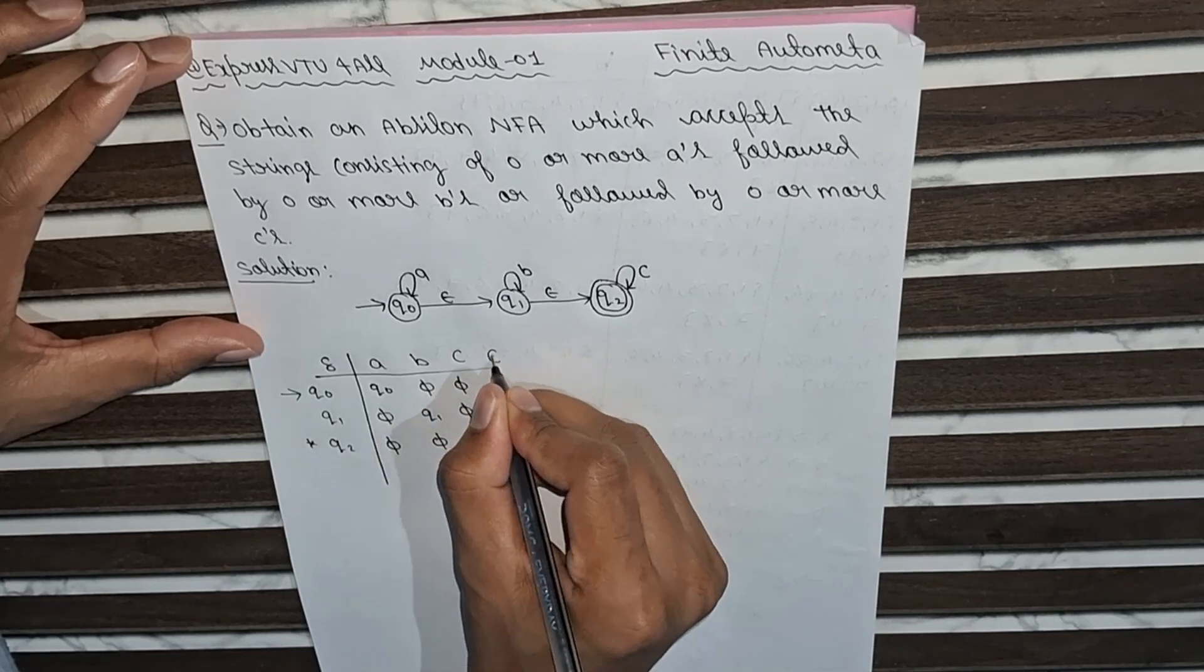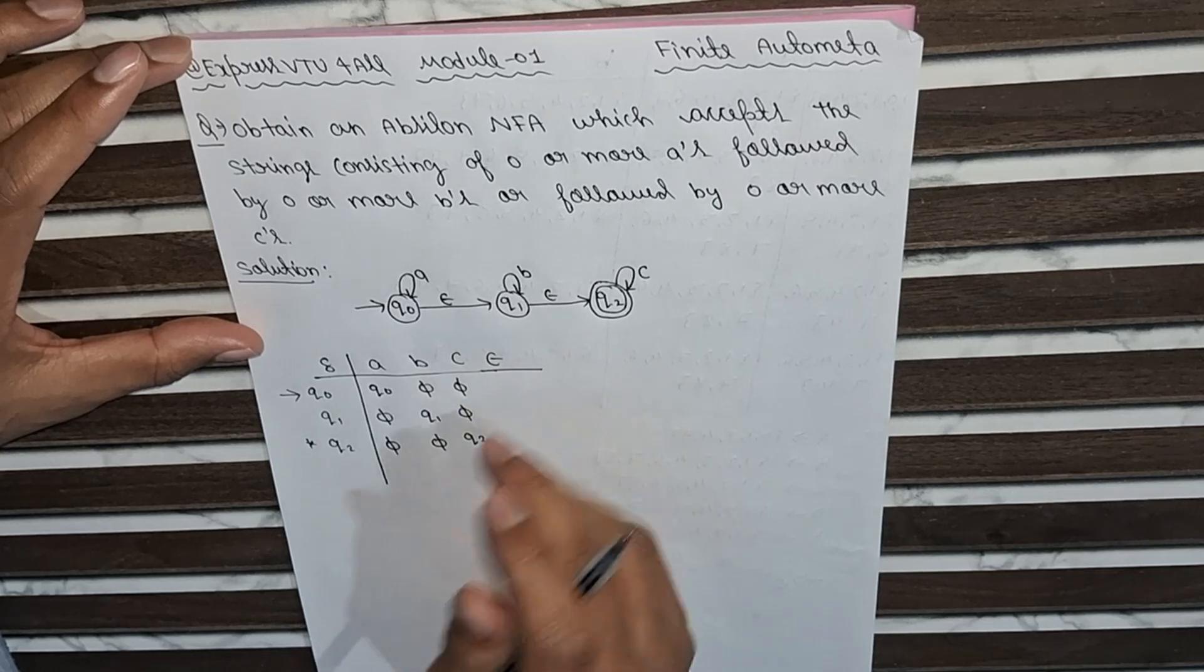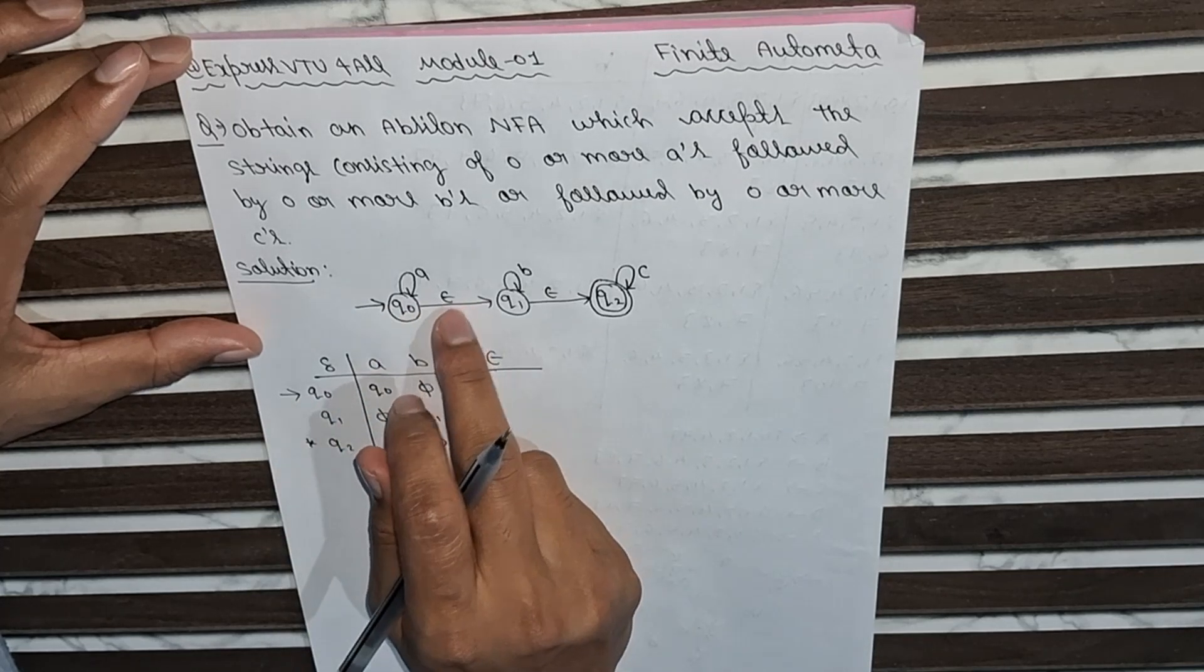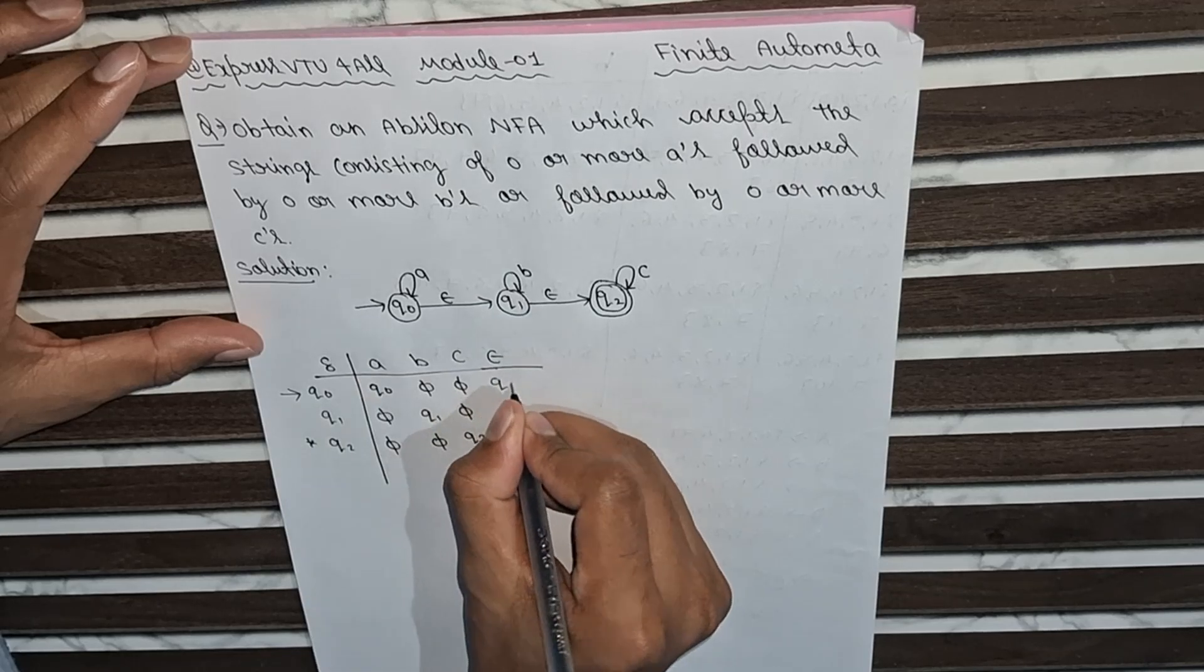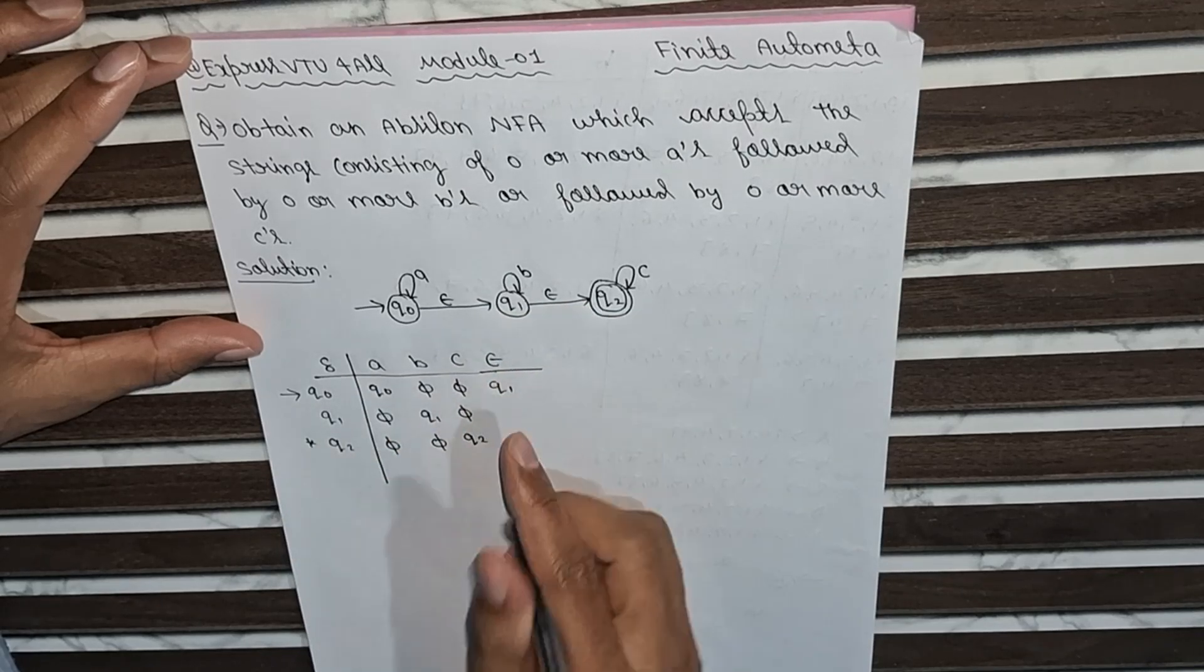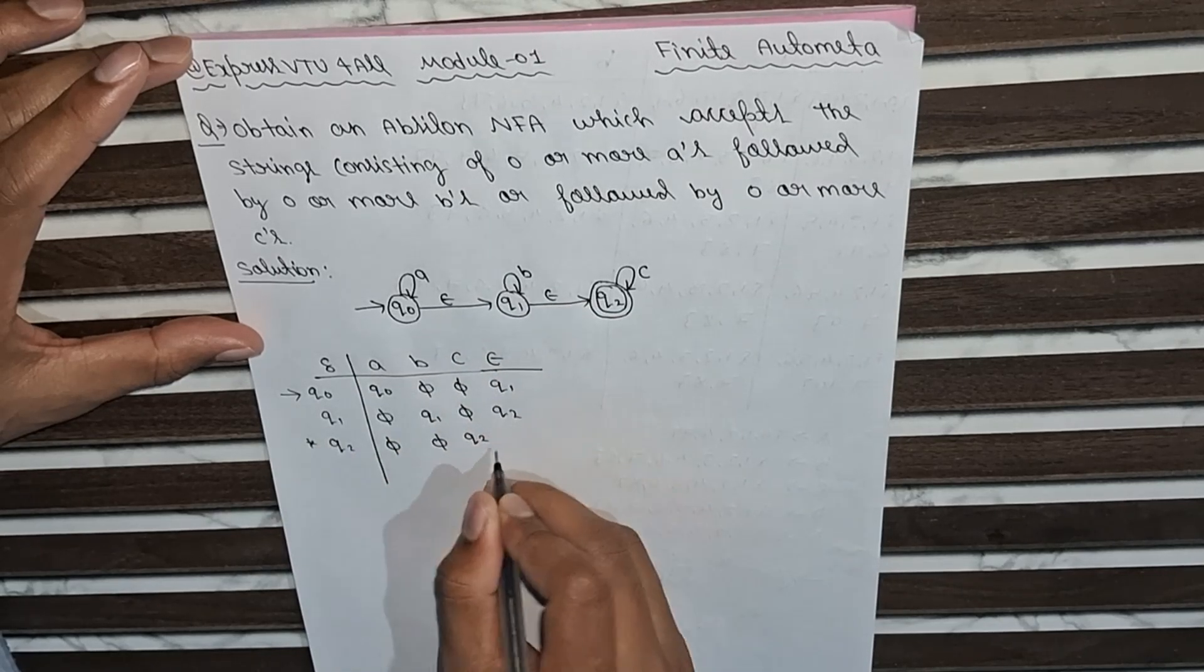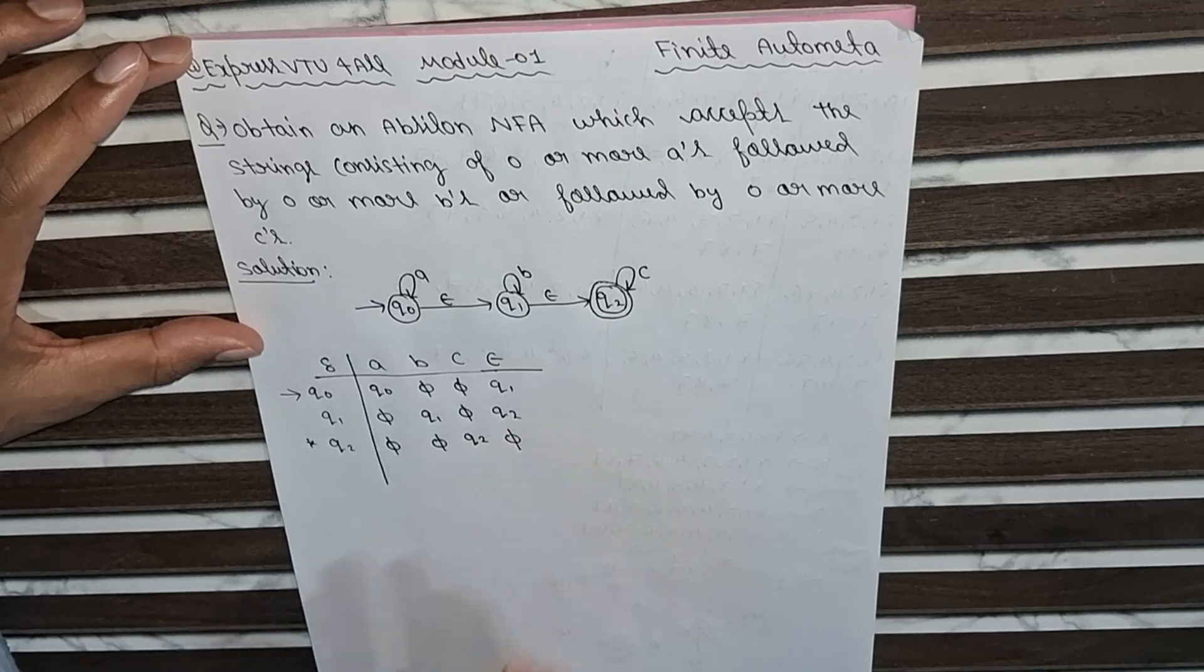Also we can define this one. q0 with the epsilon symbol, it is going to q1. q1 with epsilon, it is going to q2. And here this is nothing but phi.